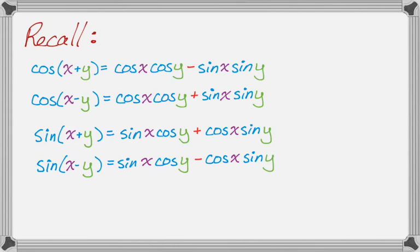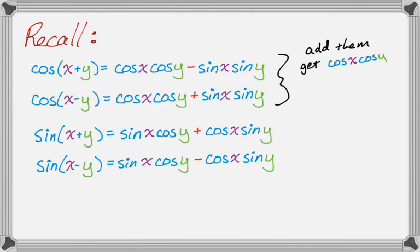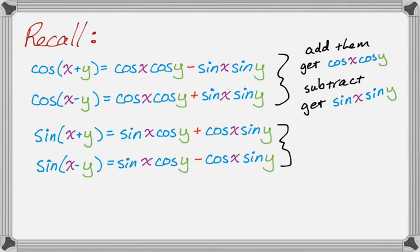If you look at these formulas, there are ways to combine them to make useful things happen. If you add cosine of x plus y and cosine of x minus y together, the sine terms cancel and you get 2 cosine x cosine y. If you subtract them cleverly, you get something in terms of sine times sine. And adding the sine formulas gives you something for sine x cosine y.